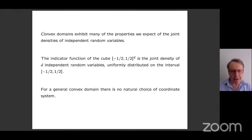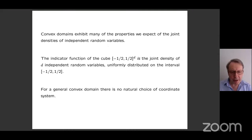I'd better explain a little bit what I mean by that. The idea is that convex domains, or their indicator functions, exhibit the sort of properties that you're familiar with in probability theory — the sort of properties you expect of the joint densities of independent random variables. Now there is one convex set, the cube in d dimensions, whose indicator function literally is the joint density of d independent uniformly distributed random variables on the relevant interval.